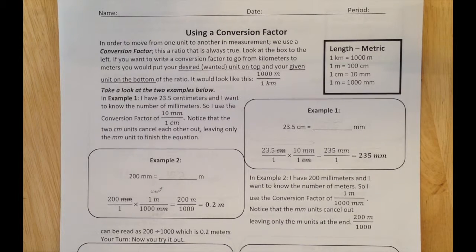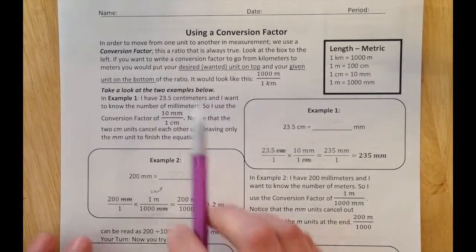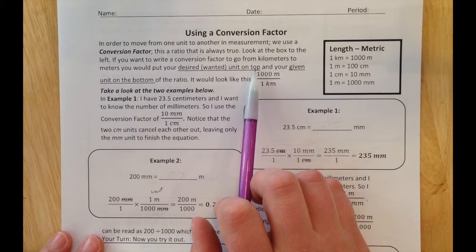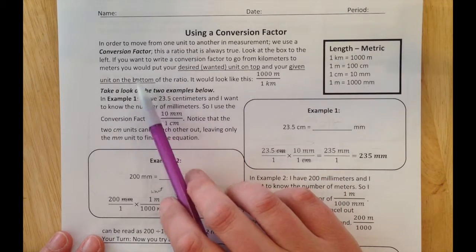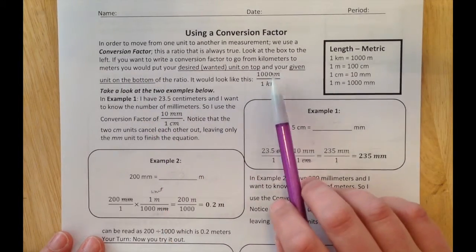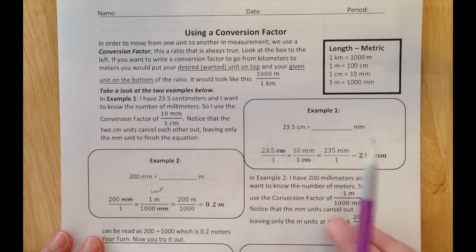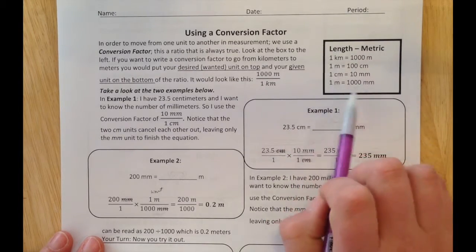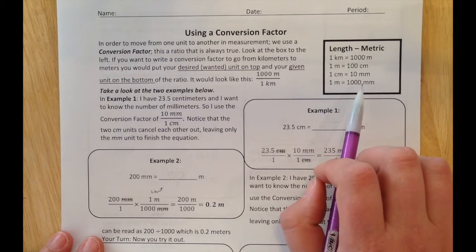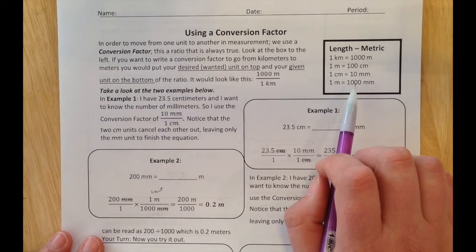A conversion factor is a ratio of two units that's always true, allowing you to move from one thing to the next. You write your desired unit on top and your given unit on the bottom. It ends up looking like a fraction. Normally you'll be given a table like this one in metric, which shows the basic conversions you'll use to make your conversion factor.